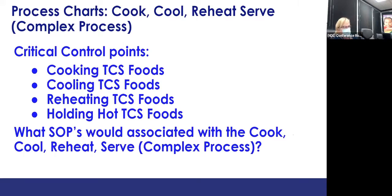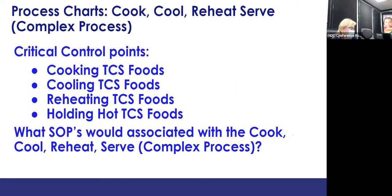The complex process — cook, cool, reheat, and serve — involves cooking TCS foods, cooling TCS foods, reheating TCS foods, and serving and hot-holding TCS foods. An example might be chili, where you cook the ground beef and then finish it the next day, or lasagna where you cook off the ground beef and then assemble it. The SOPs for this process include hand washing and using suitable utensils.